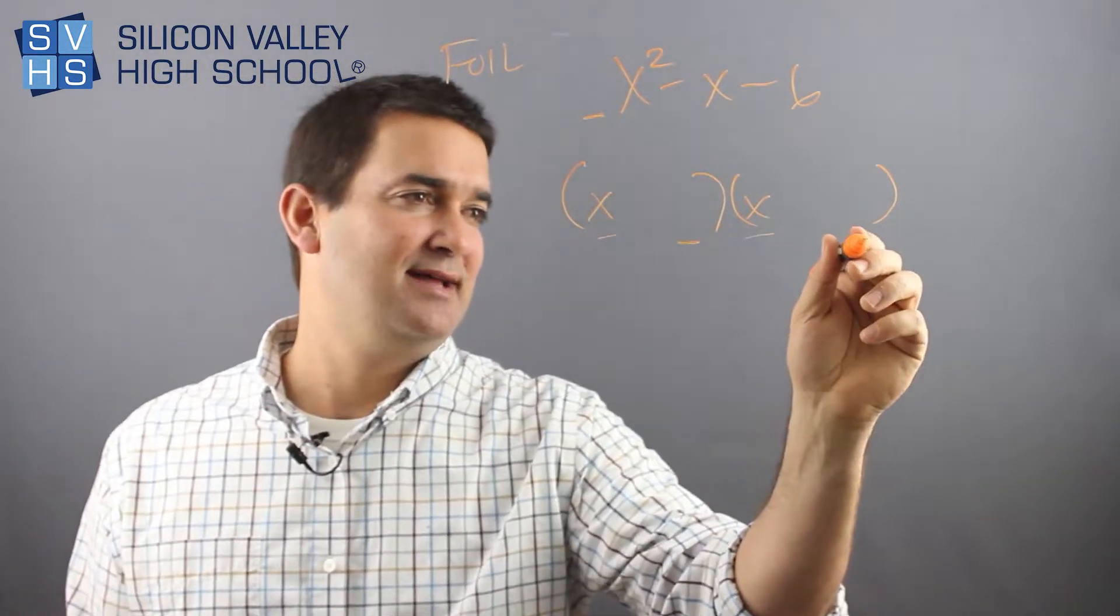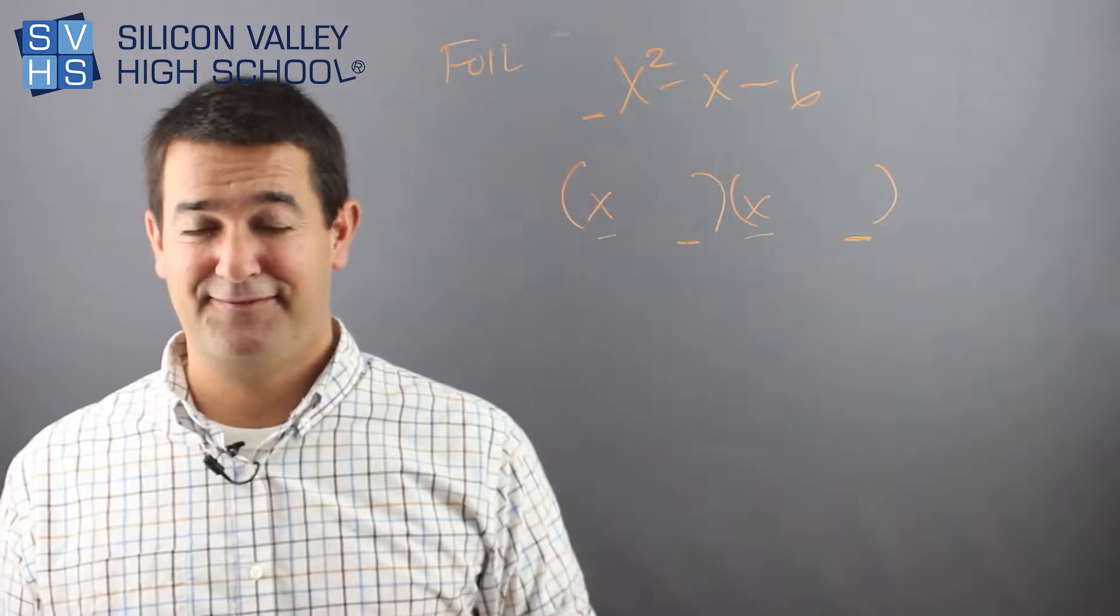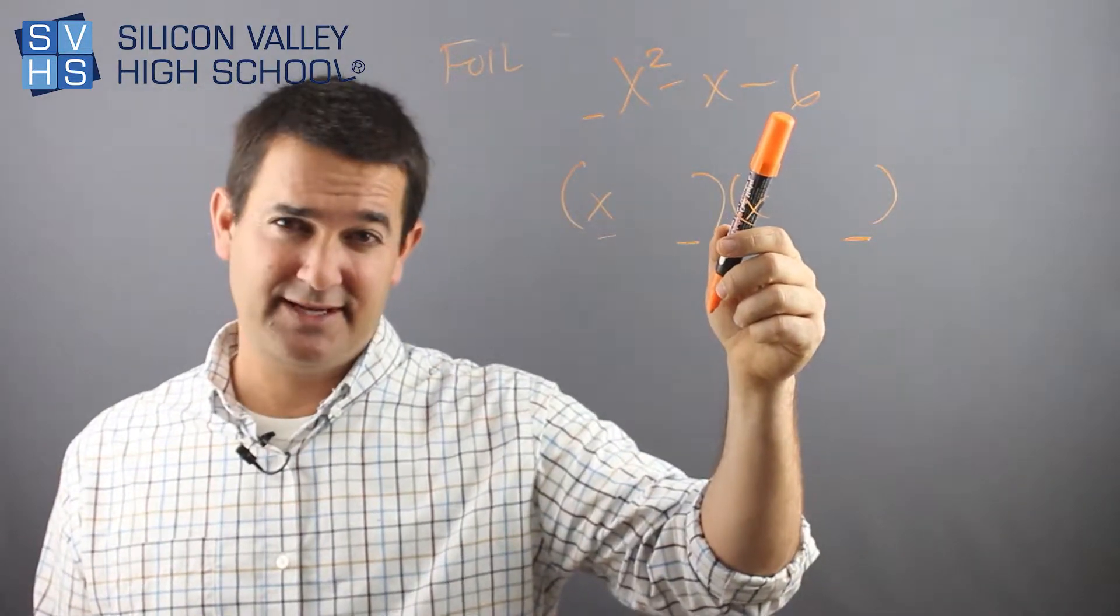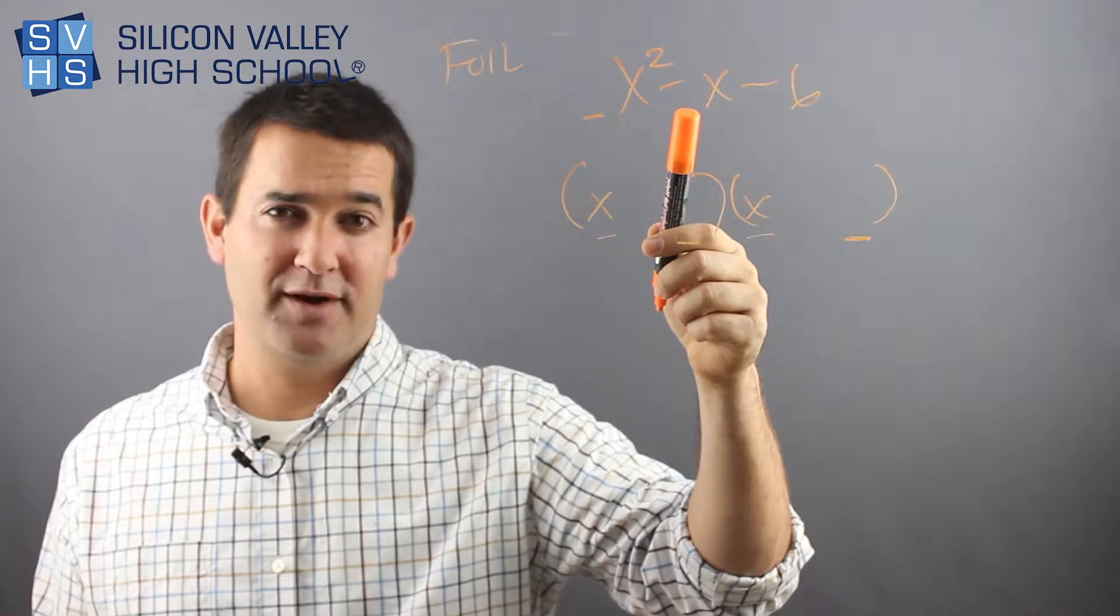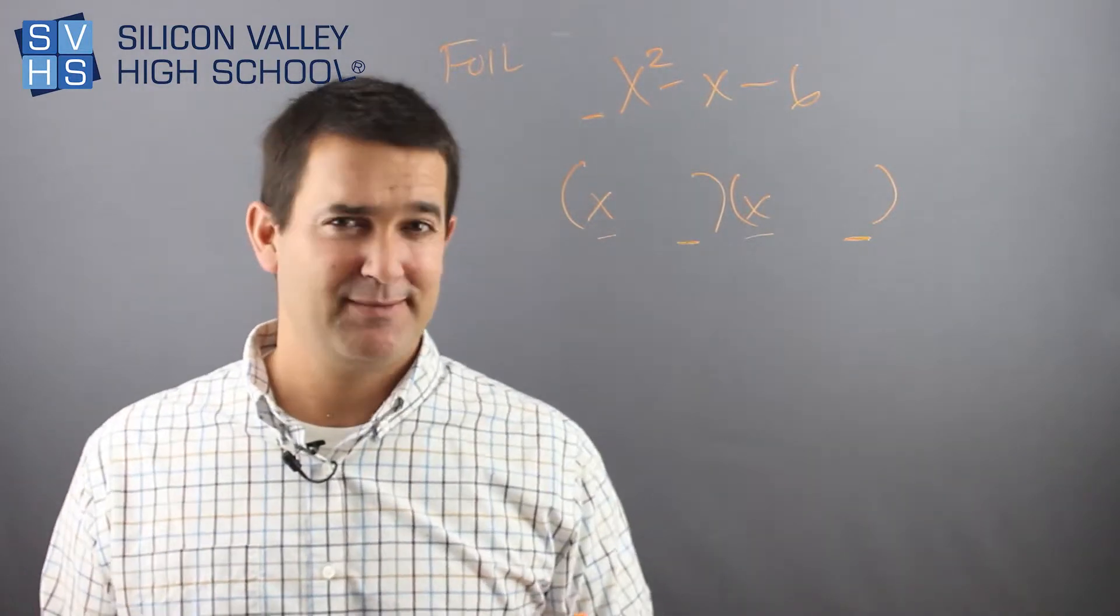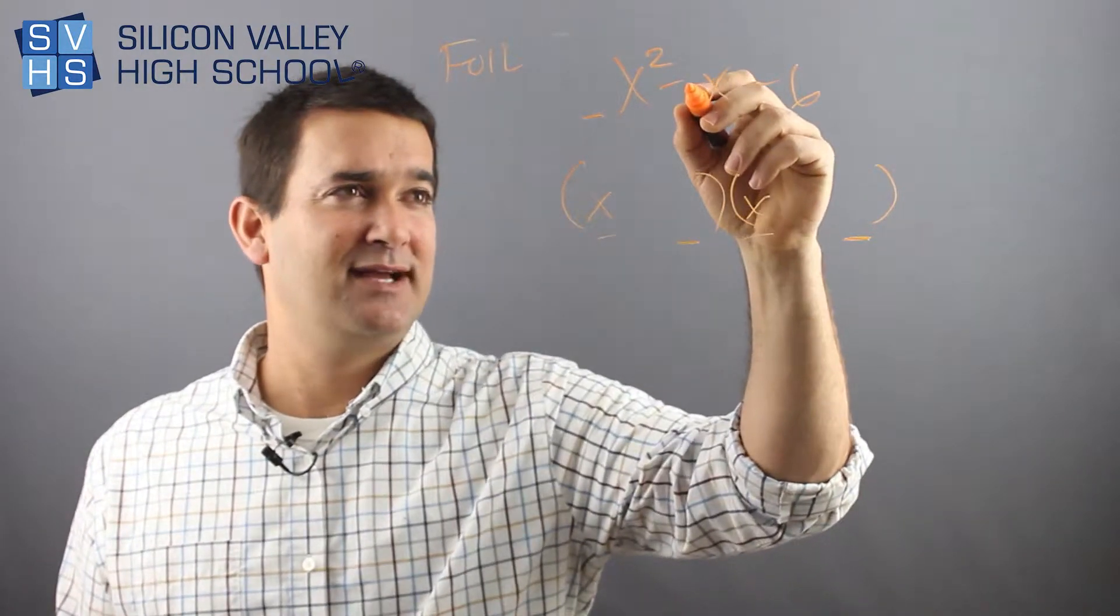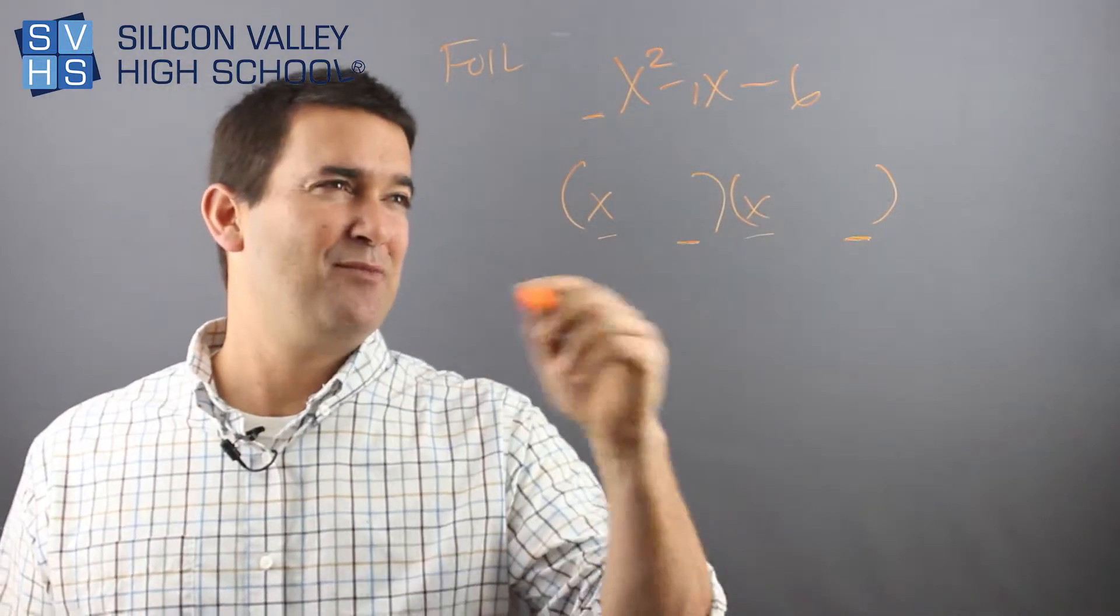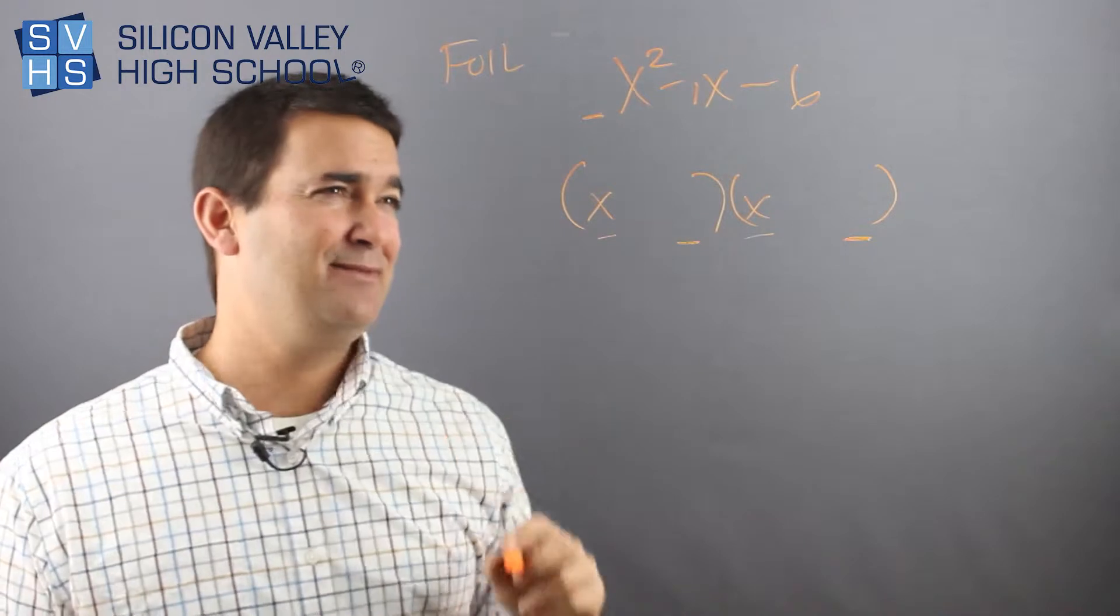Now for these two guys you actually have to focus. These two positions multiply to be -6 and add to be -1. Where did I just come up with -1? This negative x is technically -1x. Of course no one writes that but that's what it is. So they multiply to be -6 and add to be -1.